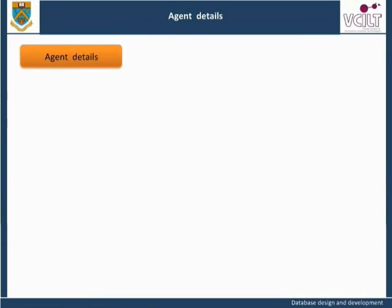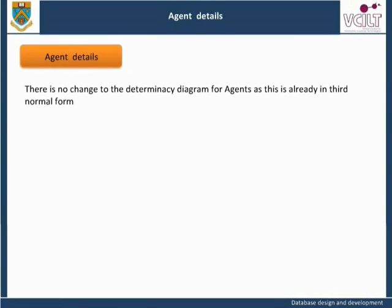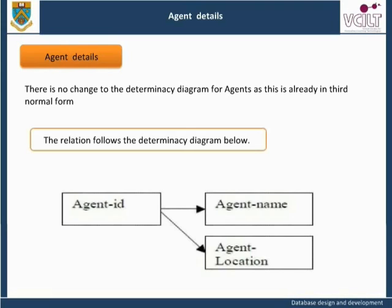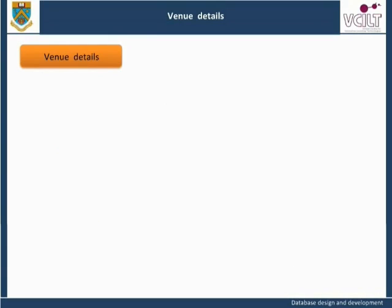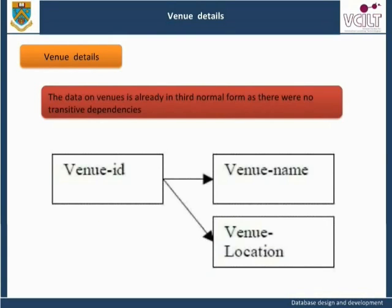Agent Details in 3NF: There is no change to the determinacy diagram for agents, as this is already in third normal form with no transitive dependencies. Venue Details in 3NF: The data on venues is already in third normal form, as there were no transitive dependencies. There are therefore no changes to the determinacy diagram.